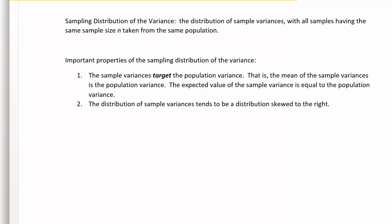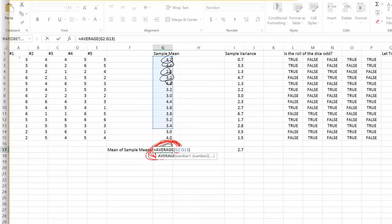The next sampling distribution we want to look at is the sampling distribution of the variance — that's the distribution of all the sample variances, with all samples having the same sample size n taken from the same population. The variance is just the square of the standard deviation, and we can use Excel to find the variance.